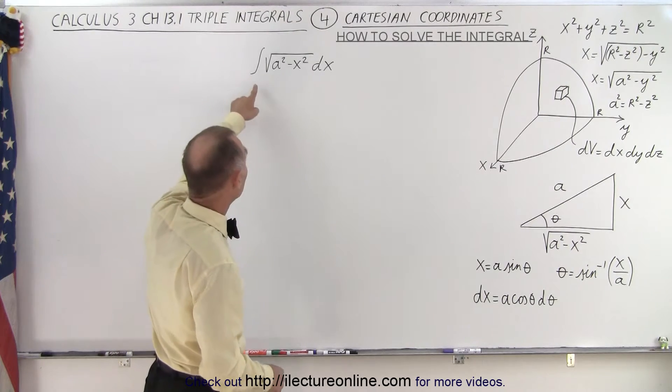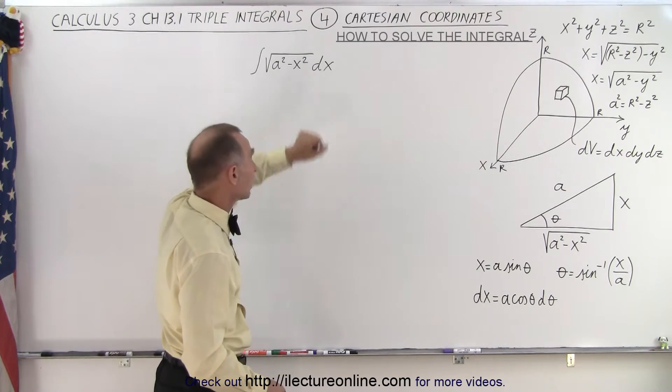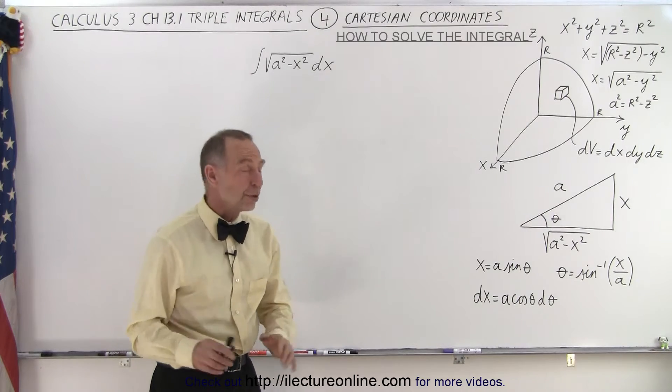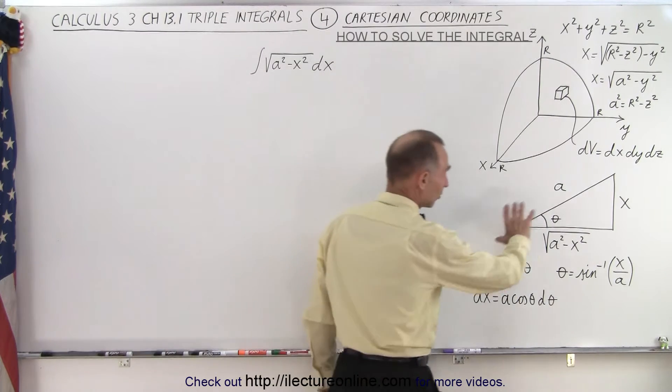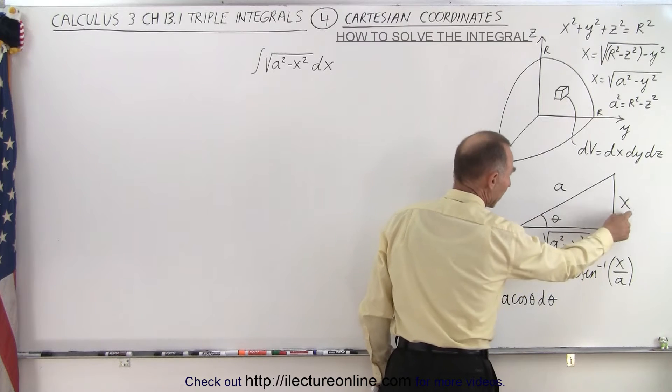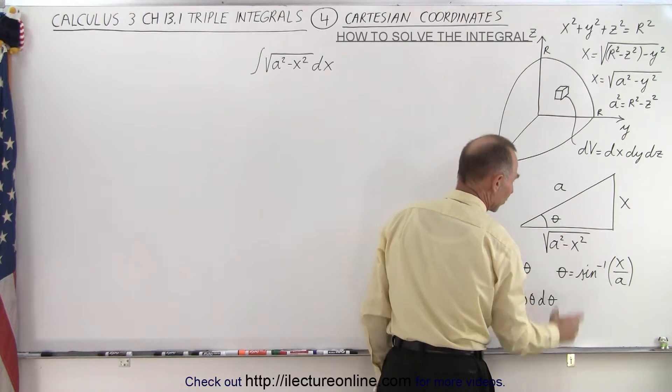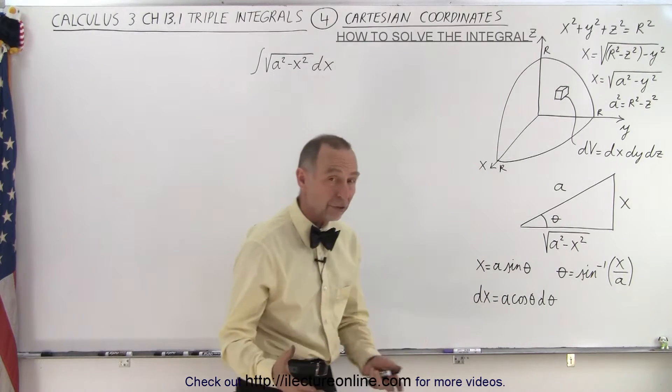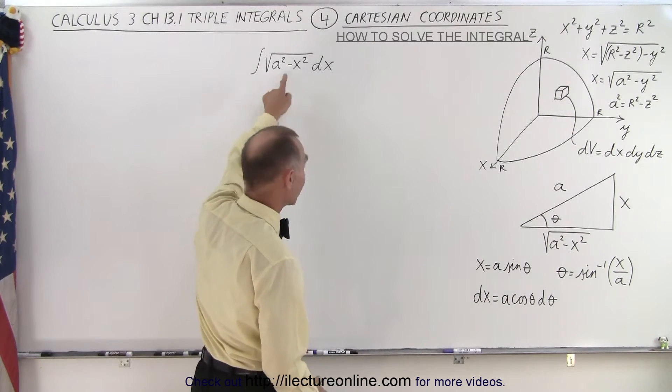The integral was the square root of a squared minus x squared dx. So what we need to do here is we need to use a trick substitution. We do that by calling the hypotenuse a, the opposite side x, the angle theta, and then of course the adjacent side will be the square root of a squared minus x squared which is what we have here.